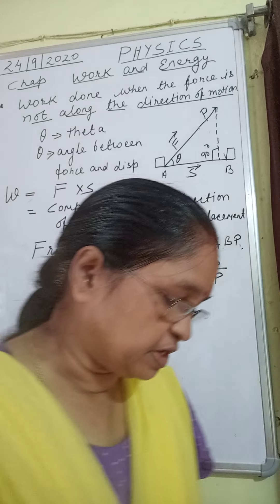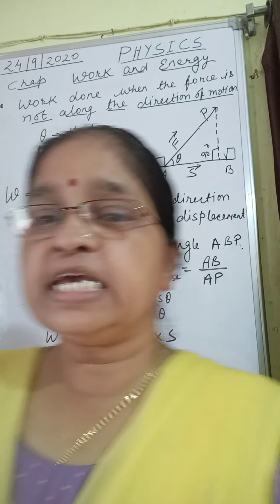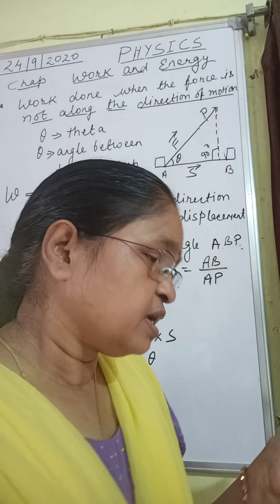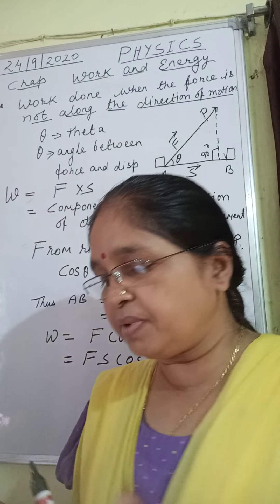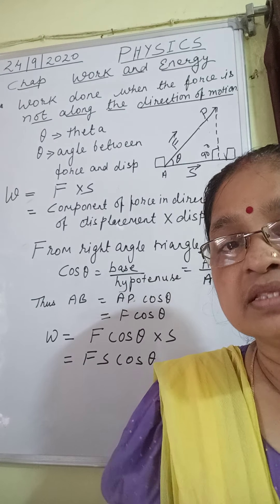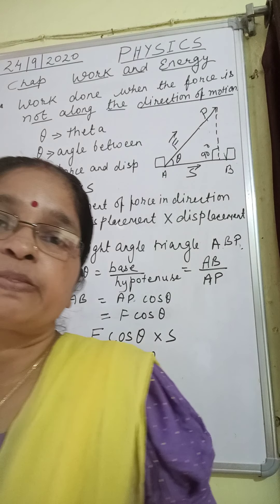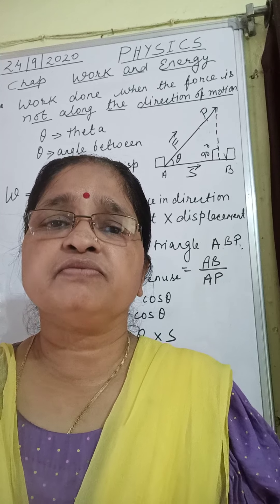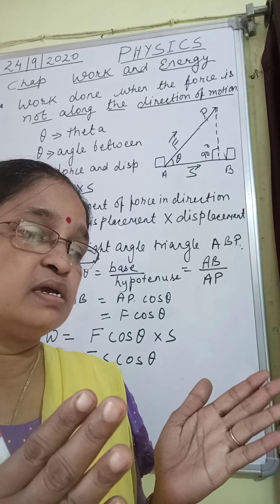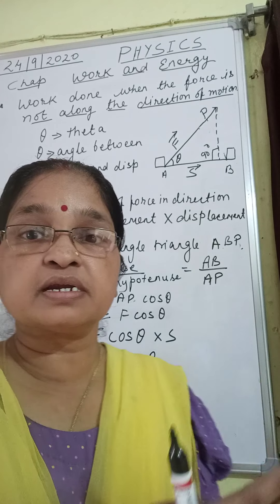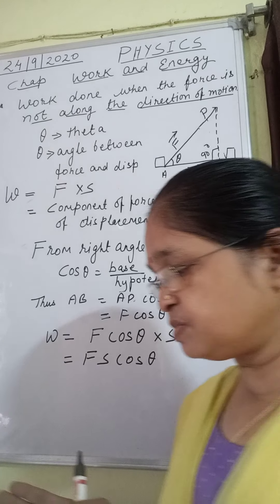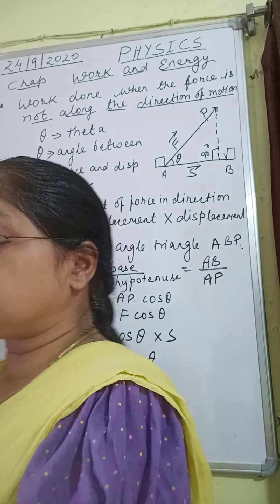Now you can see I am moving. As I am moving, you can say work is done by me because I am applying force in the forward direction and my body is displaced from one position to another position. This means I have done work. Can you see whether work is a scalar quantity or a vector quantity? A vector quantity means the body is displaced in a certain specific direction — that is the direction of displacement.